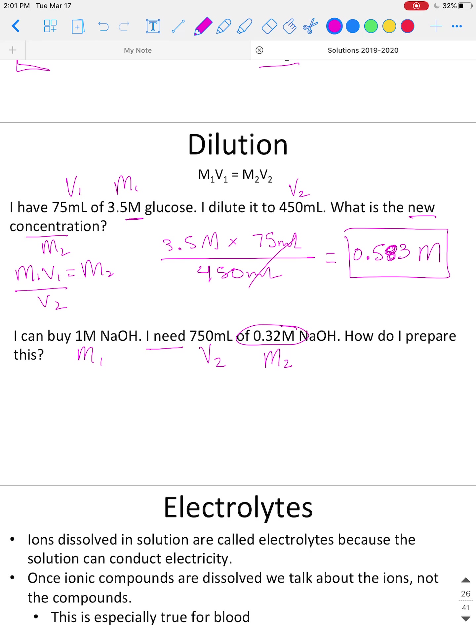Because 0.32 molar is the diluted concentration, which is M2. So we have M1, V2, and M2, which must mean we need to know V1. How do I prepare this? Well, we need to know what volume of our stock solution we need to dilute. Let's arrange the equation: M1V1 equals M2V2. We're going to divide both sides by M1. M1 cancels out on this side, so rewrite your equation: V1 equals M2V2 over M1.